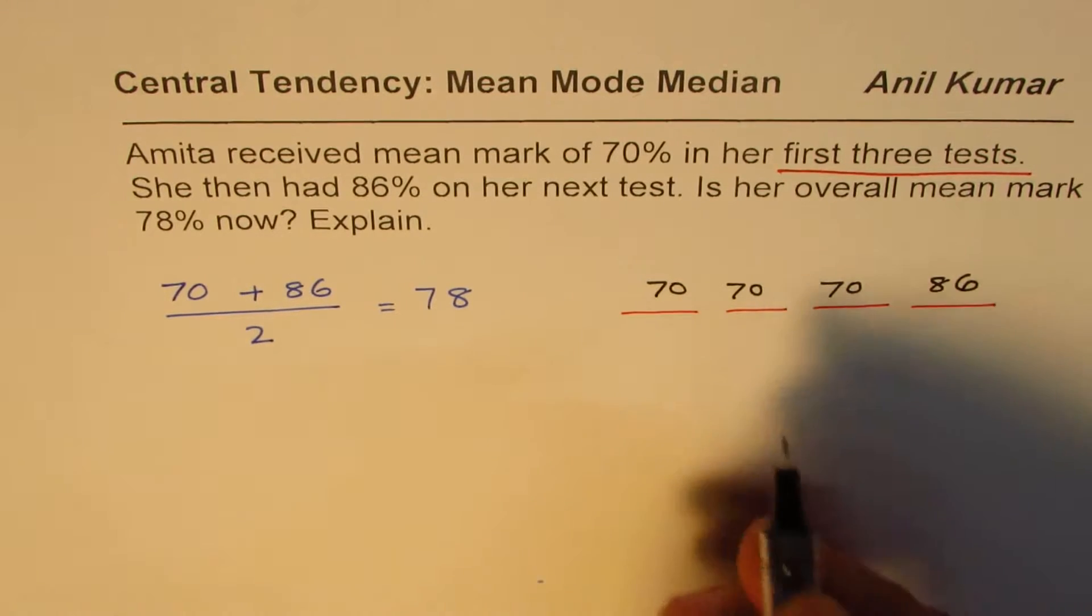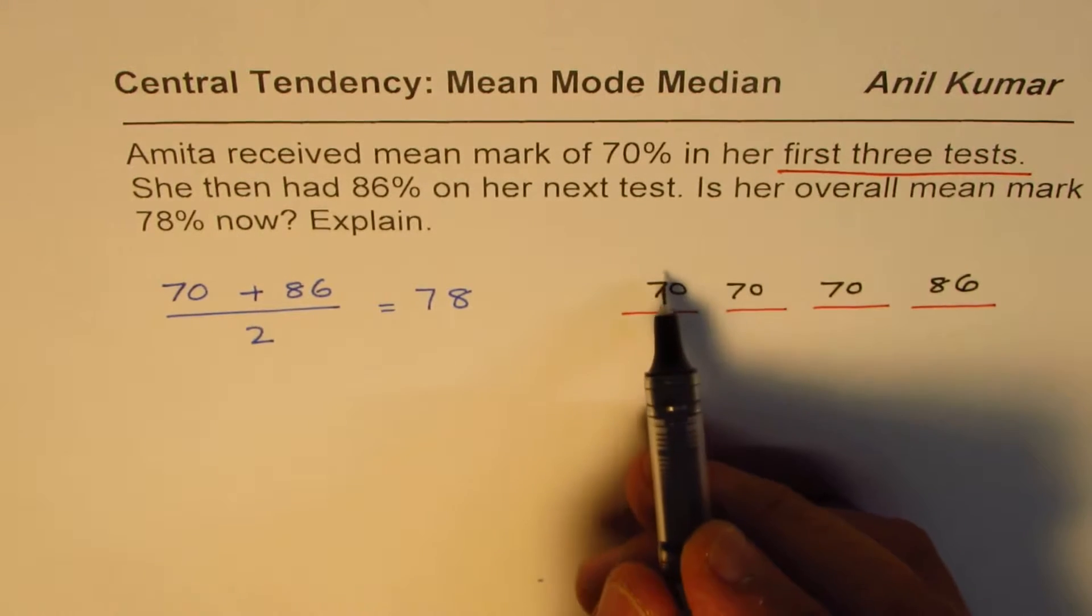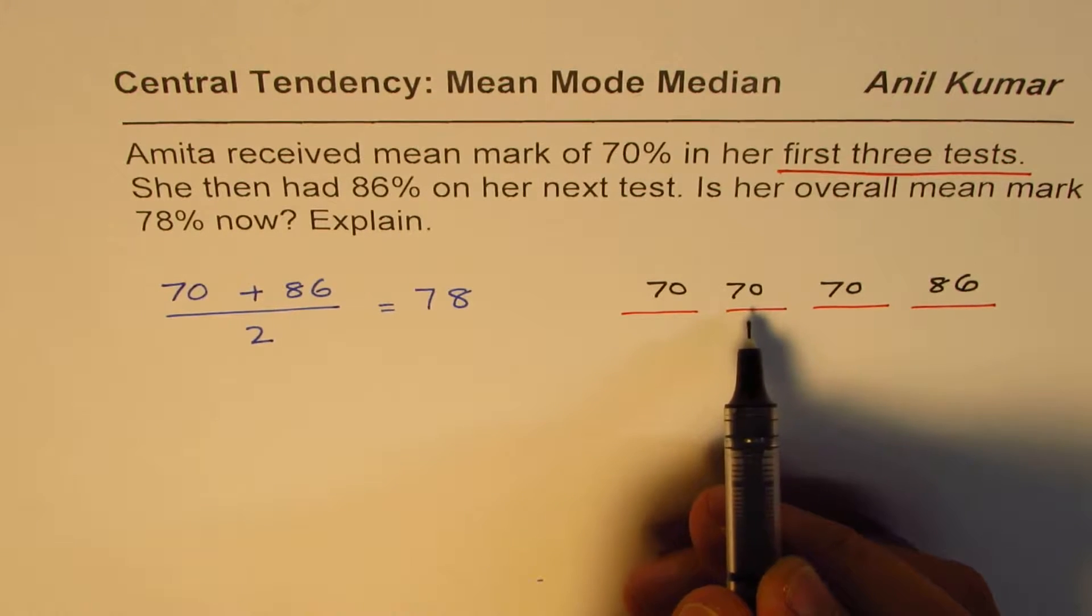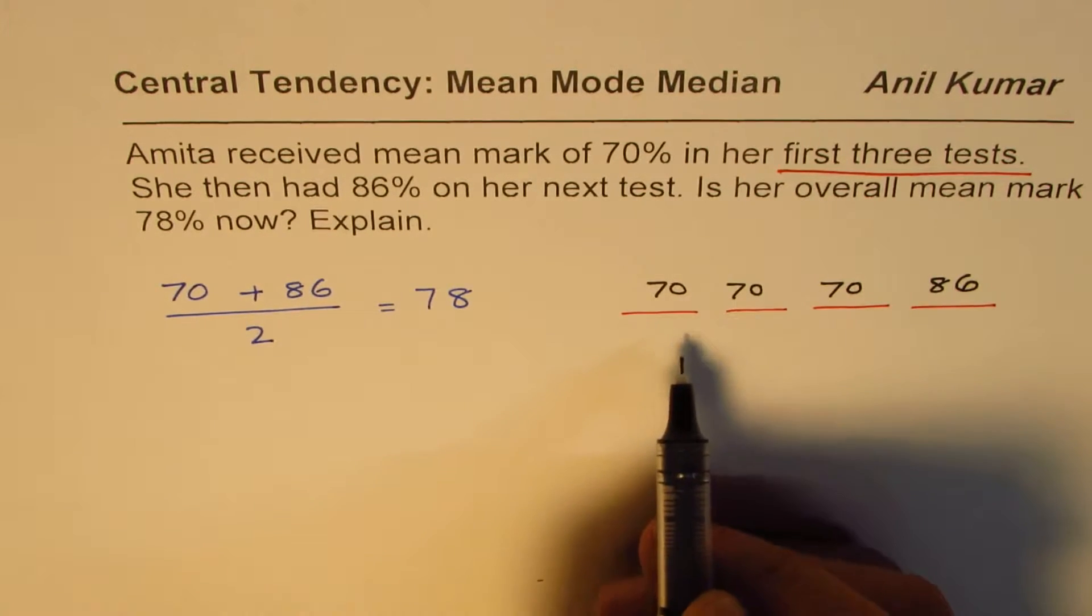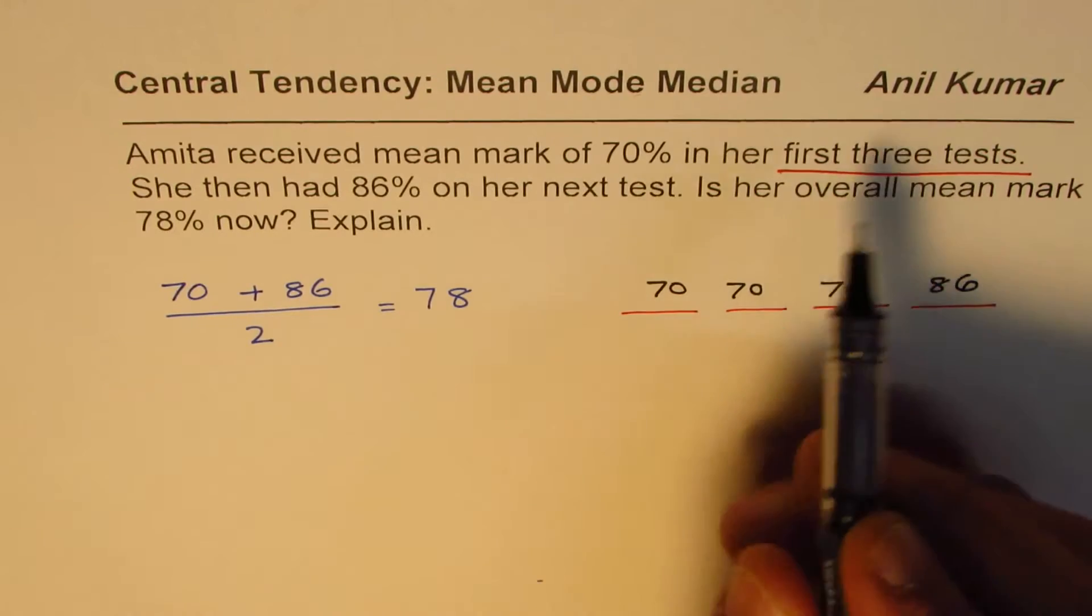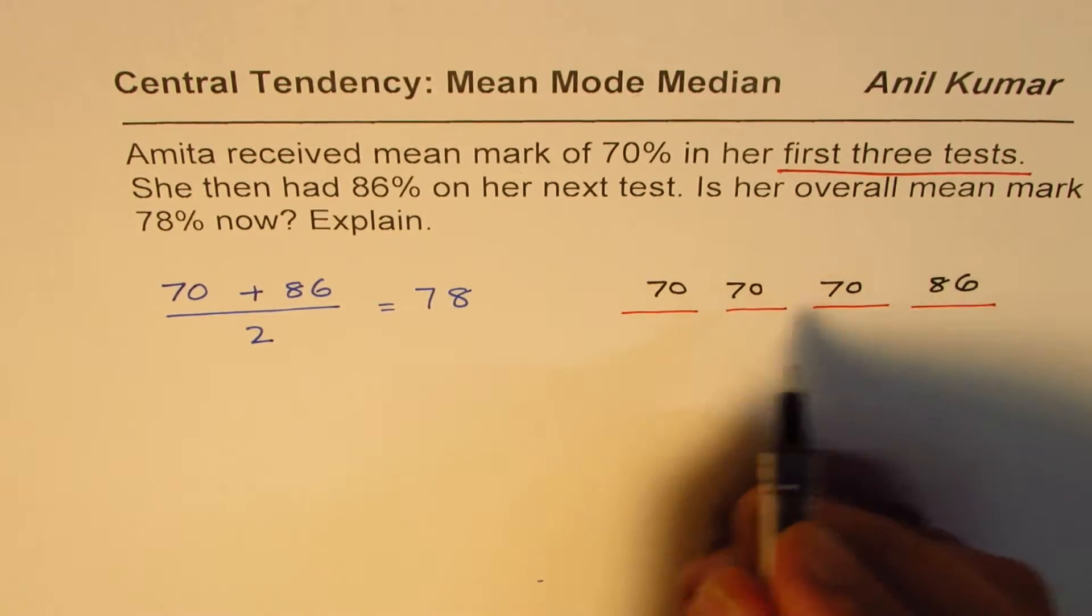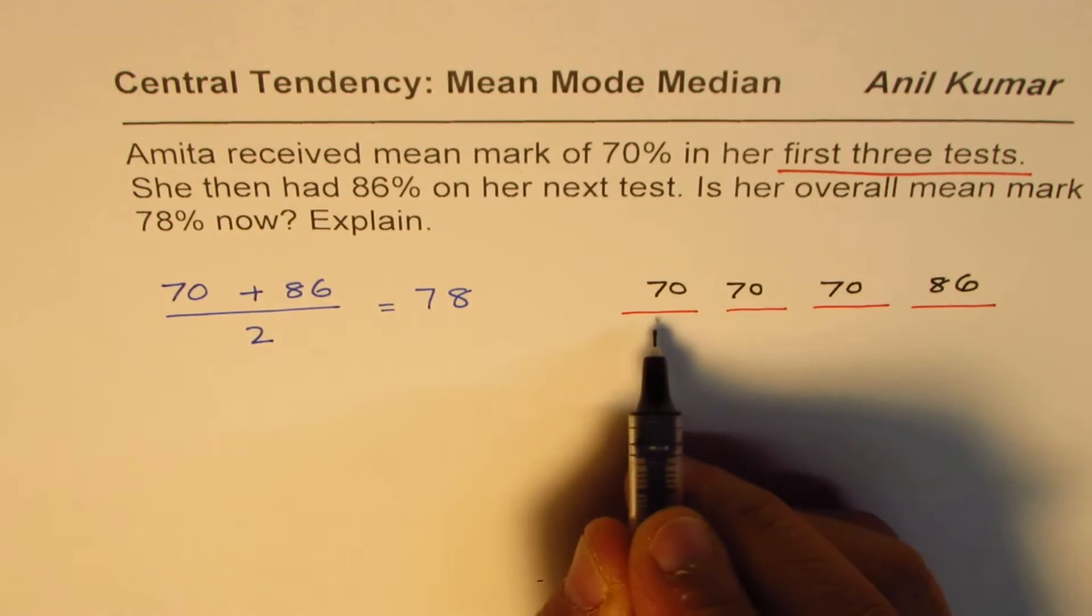Strictly speaking, it could be 80 and 60, any combination, but the mean should be 70. So for easy calculations, I just written 70, 70, 70 as mean mark in the first three tests. So in four tests...